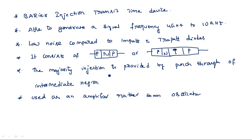Generally in the two diodes seen earlier — IMPATT and TRAPATT — avalanche breakdown occurs. But here in the BARITT diode, instead of avalanche breakdown, the process is punch-through. Punch-through means suddenly the maximum amount of current flows on either side.